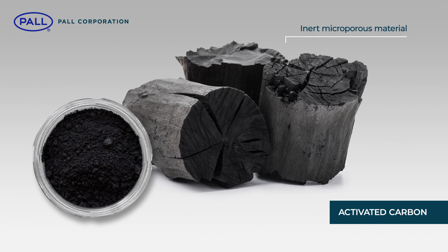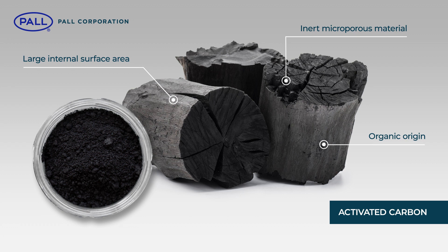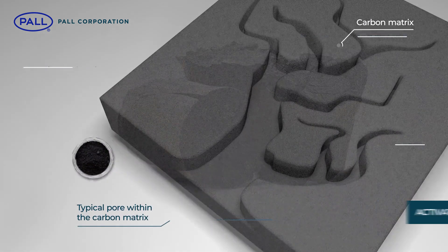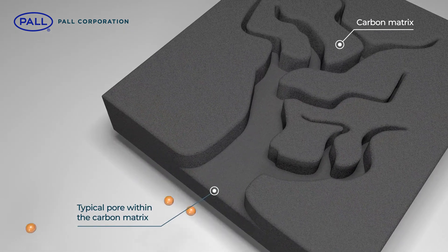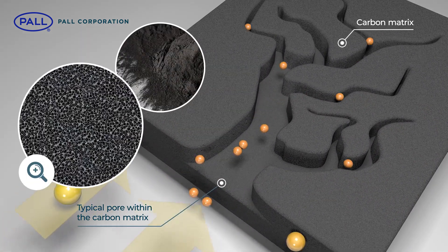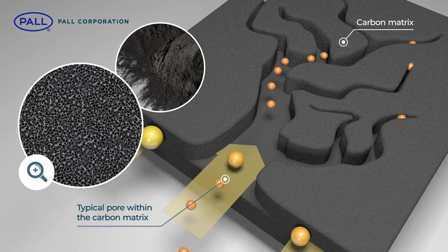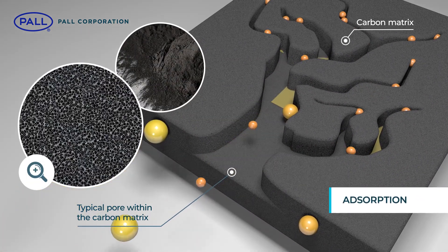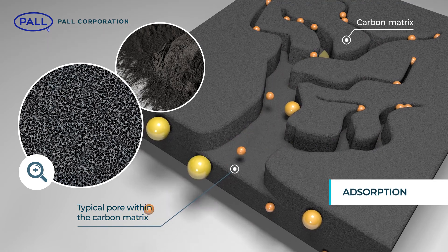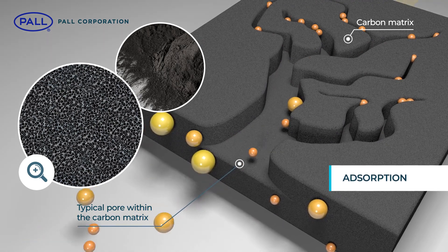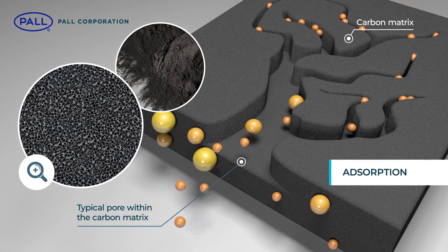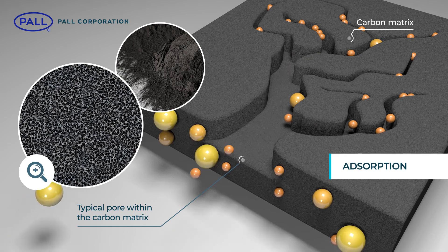Activated carbon is an inert microporous material of organic origin and is characterised by its large internal surface area and high porosity qualities. Unlike more conventional forms of filtration, activated carbon uses adsorption as a means of particulate separation and it's within its millions of pores that this process takes place.